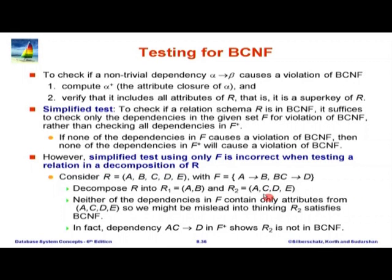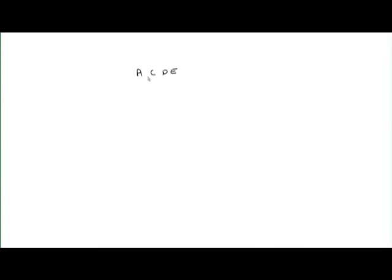We inferred AC→D to decompose ACDE. We get ACD as one relation, and ACE as the other. To check BCNF on decomposed relations, there is a nice alternative: take every set of attributes alpha (a subset of Ri) and check alpha+ computed with respect to the original functional dependencies. If alpha+ either includes no attributes of Ri minus alpha, or includes all attributes of R, we are fine. If alpha+ includes some but not all attributes of Ri, it shows a violation. This is the simplified test — all based on attribute closure, avoiding the need to compute all of F+.